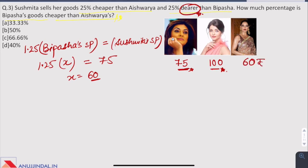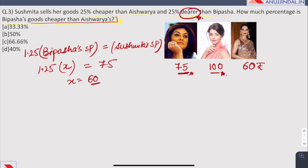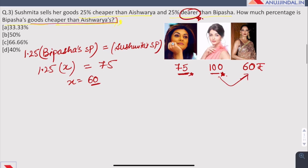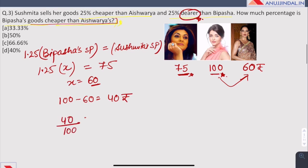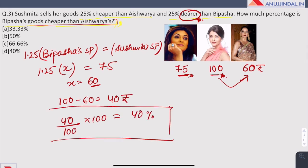So it comes out that Bipasha sells her goods at 60 rupees. Now the question asks how much percentage Bipasha's goods are cheaper than Aishwarya's. The difference is 100 minus 60 which is 40 rupees and 40 rupees is 40% of 100 rupees. So the answer is D, 40%. Bipasha sells her goods 40% cheaper than Aishwarya.